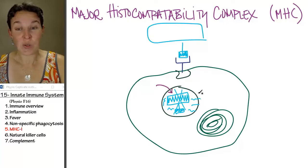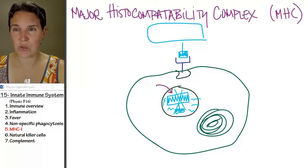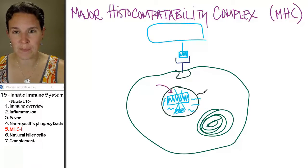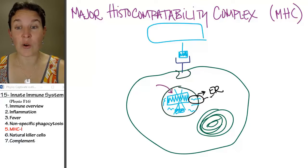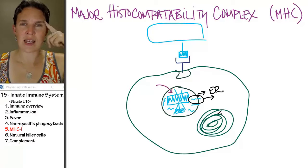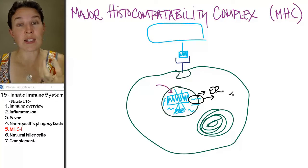As soon as we have broken it up into parts, this vesicle is going to fuse with the endoplasmic reticulum. And pathogen parts are going to dump into the endoplasmic reticulum. Now, if you think about what the endoplasmic reticulum does, it's involved in processing proteins.